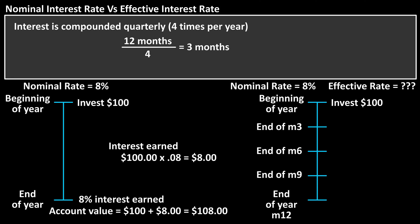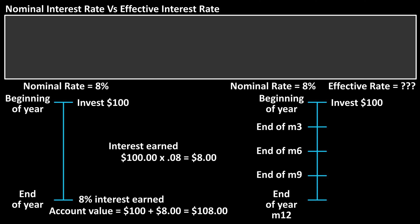This will be at the end of month 3, month 6, month 9, and month 12, which I have marked on the timeline. At the end of month 3, March, is the first compound. To calculate this, we don't use 8% because that is a yearly rate, not a quarterly rate.